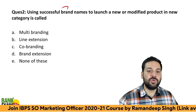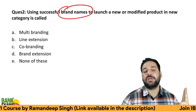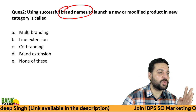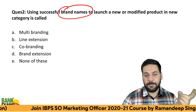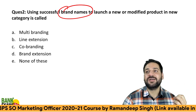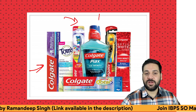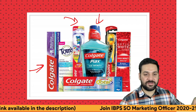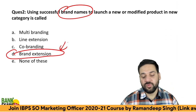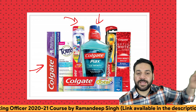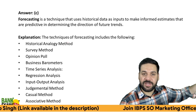Using a successful brand name to launch a new or modified product is the concept here. Building a brand is expensive. Consider brands like Maggie, Vaseline, Colgate, Pepsodent, Coke. Maggie launched noodles, then soup, then masala. Colgate started with toothpaste, then added toothbrush and mouthwash, becoming a full dental care brand. This is called brand extension — using the same brand name and extending it to new products.